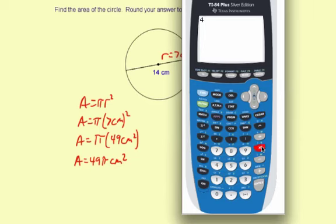So 49 times 3.14. 153.86, rounded to the nearest square centimeter, is 154.